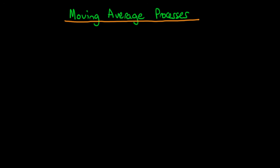In this video I want to introduce the concept of moving average processes and then provide some real-life examples of processes which might follow a moving average process. Mathematically, a moving average process is: Xt is equal to some disturbance term Et plus some constant theta times Et minus 1.